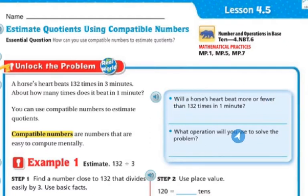So let's look at breaking this apart. Will a horse's heartbeat more or fewer than 132 times in one minute? Well, if it's 132 times in three minutes, then we know it's going to be less in one minute. So it'll be fewer times.